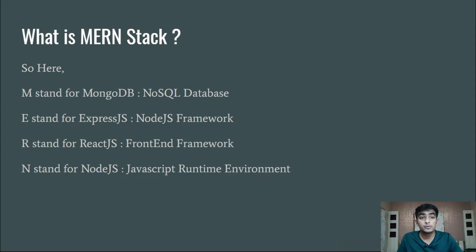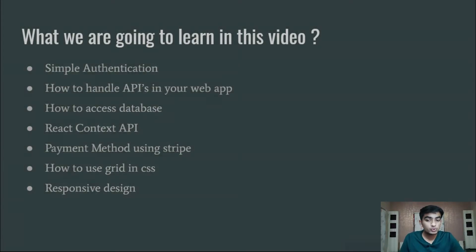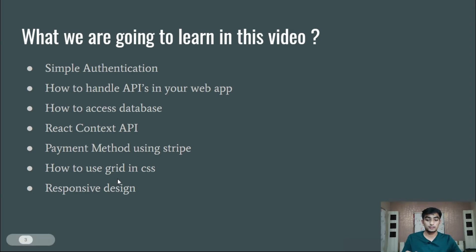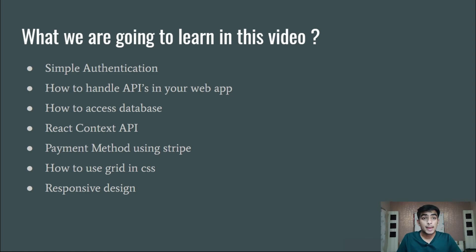Previously you could only run JavaScript in your browser, but with the help of Node.js we can run JavaScript on our system. So, what are we going to learn in this video? We are going to learn simple authentication with email and password, where the password will be encrypted. How to handle APIs, how to access databases like MongoDB and SQL — both databases have different methods to access. React Context API, payment integration using Stripe, how to use CSS Grid, and responsive design. So today's video is going to be very interesting — let's go and build this Amazon clone!